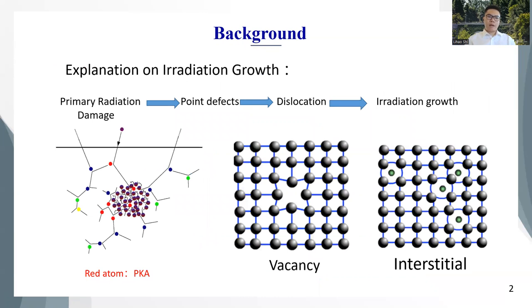Here is an explanation of the irradiation growth. The primary radiation damage leads to the generation of point defects, and the point defects gather to the dislocation or dislocation loop, and the difference in distribution of dislocation loops leads to irradiation growth.